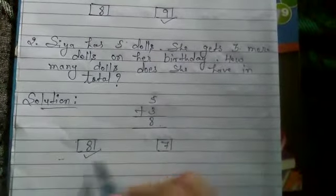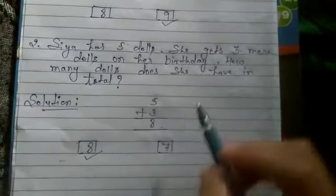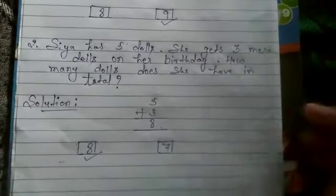So we have to see which box is 8. The first box is 8 and second number is 7. And the correct answer is 8. So we will click on 8.